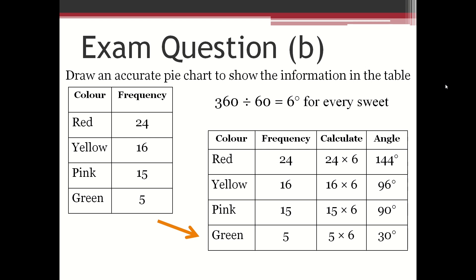One column is for calculations: 24 times 6, 16 times 6, 15 times 6, and 5 times 6. Another column shows the angles: red is 144 degrees, yellow is 96 degrees, pink is 90 degrees, and green is 30 degrees.